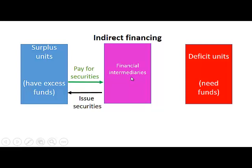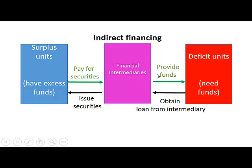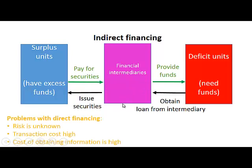The deficit unit can then obtain a loan from the intermediary, and the financial intermediary provides the funds — obtained through issuing securities — to the deficit unit, who can use them to finance their deficit. This is called indirect financing and it takes place via a financial intermediary.